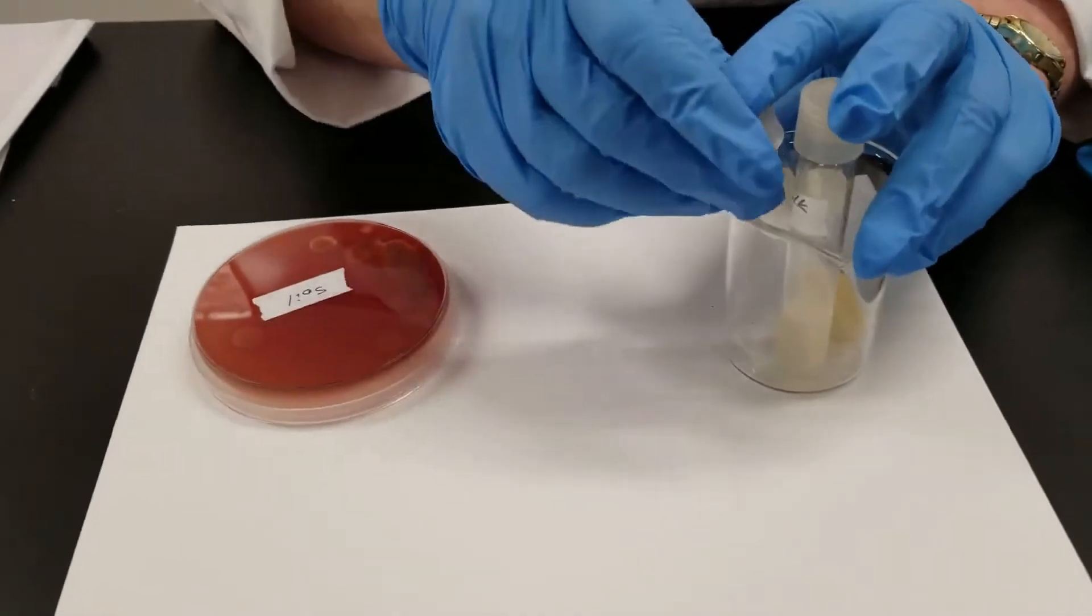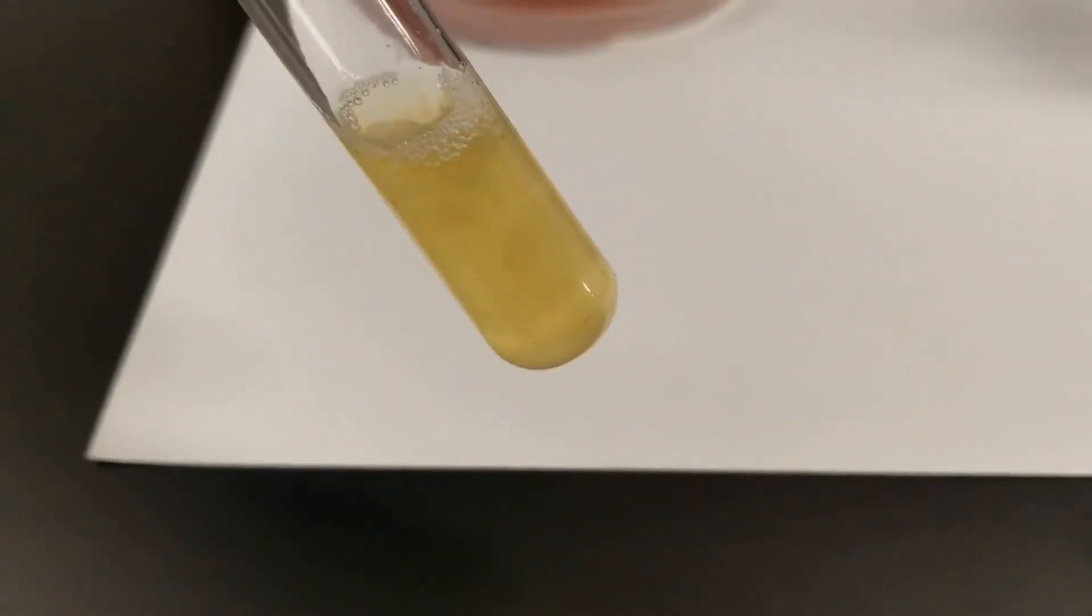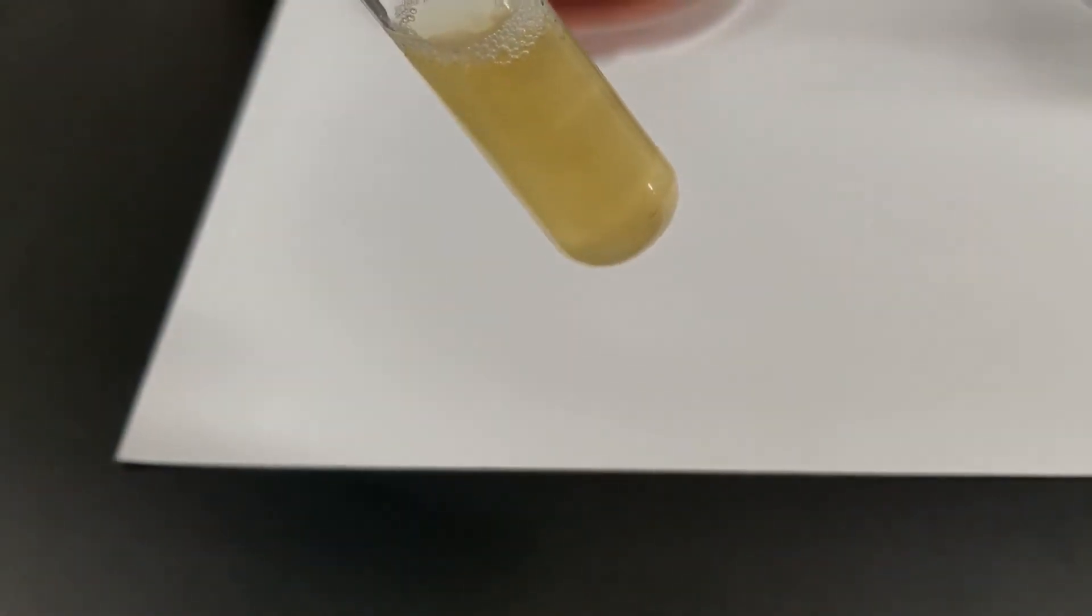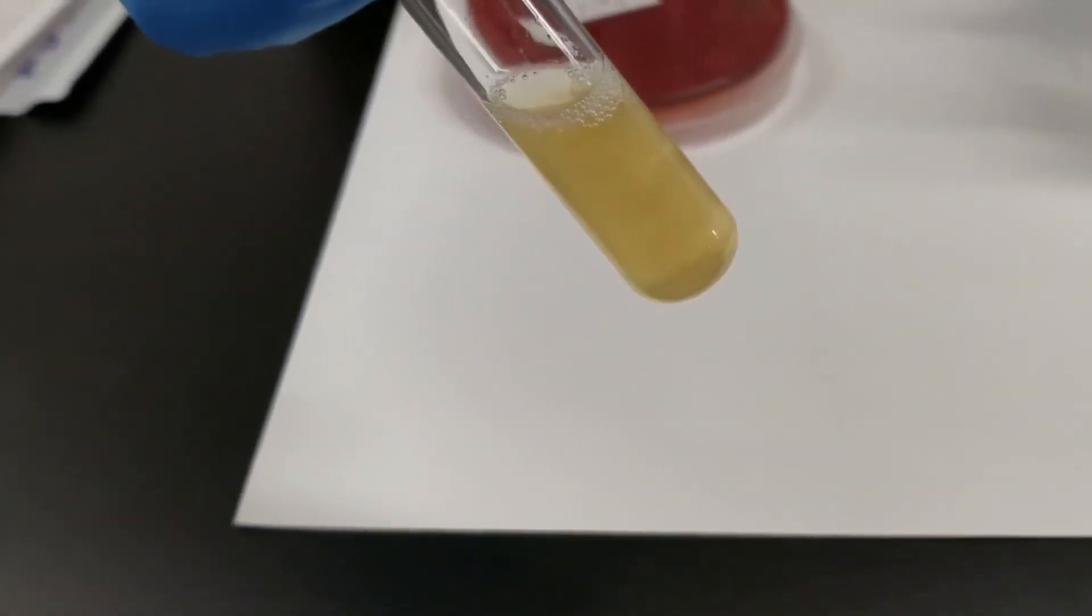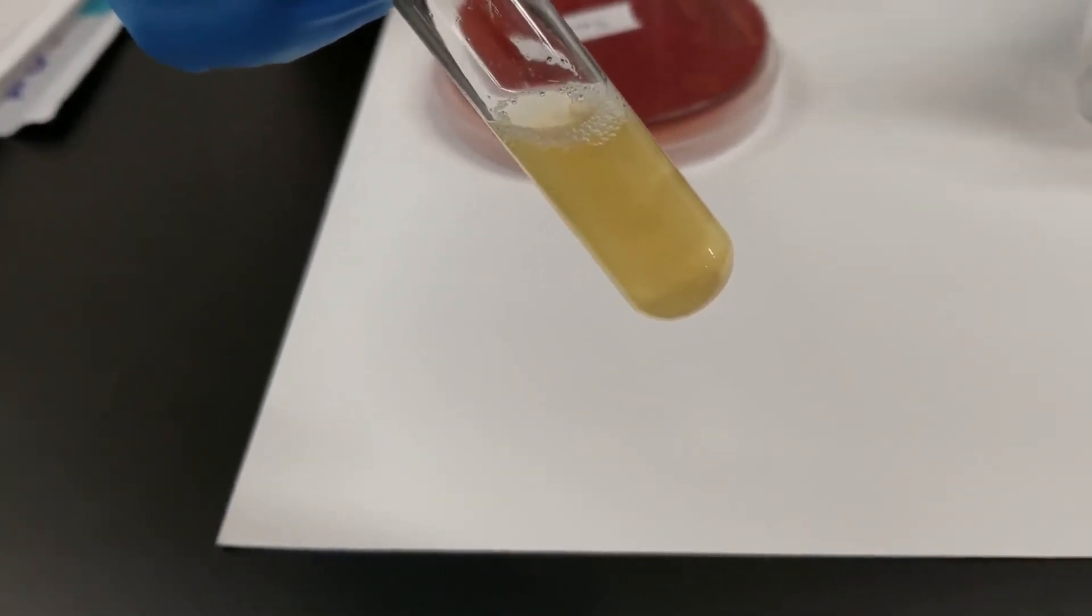The next tube we're going to look at is bioglycolate. As you can see, there's a lot of growth in this tube. Once again, more on the upper, say two-thirds of the tube, not as much down at the bottom.